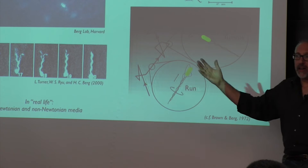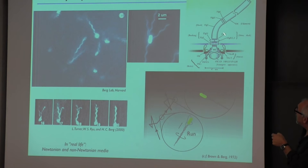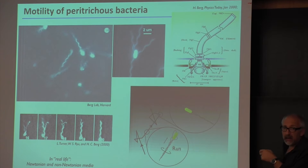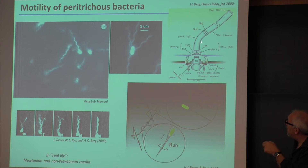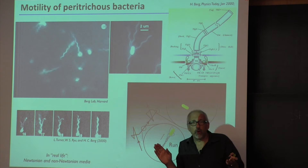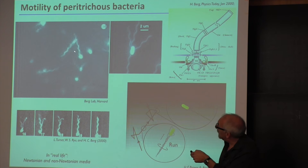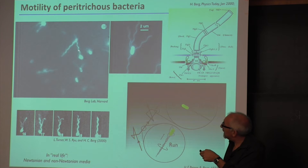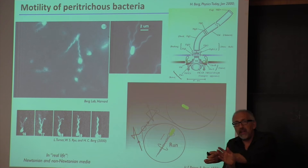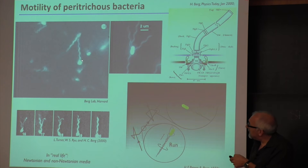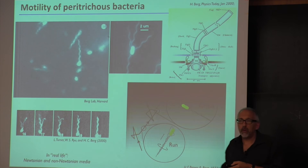The bacterial motor is a preserved characteristic across thousands of bacterial species, having evolved very early in the history of life. It is powered by protons — hydrogen ions — that transport through the motor due to a pH imbalance across the membrane. When all flagella rotate counterclockwise they bundle together and act mechanically as a single helix, propelling the organism through the fluid.